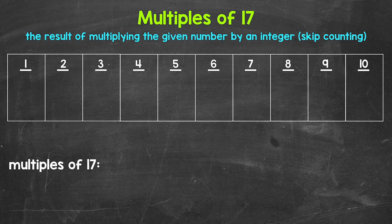So looking at the multiples of 17, let's start with 1 times 17. That gives us 17. 17 is the first multiple of 17. Then we have 2 times 17. That's 34. 34 is the second multiple of 17.